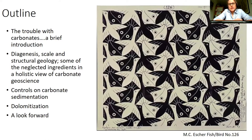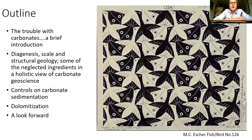One of the biggest developments of the last ten or fifteen years has been the work around process science — thinking about how individual processes and combinations of processes lead to a better understanding of product. That's really the point of this Escher picture. We can all see birds, or we can all see fish, but we don't always see both at the same time. It's important when looking at carbonate rocks to step back, take a big look at the big picture, but then zoom in and look at the detail.